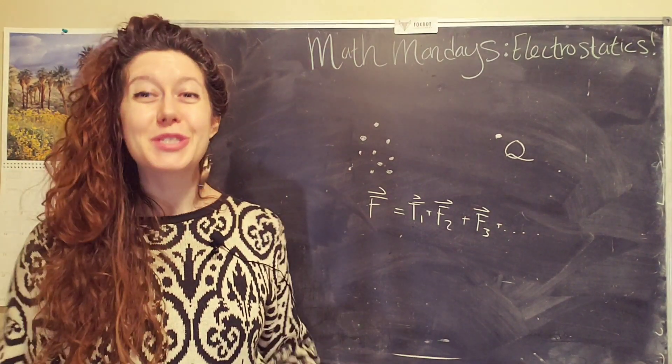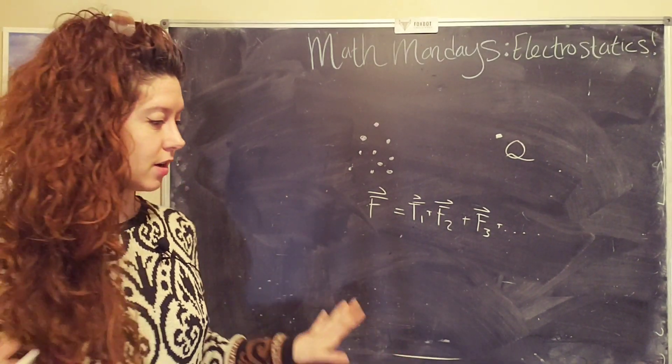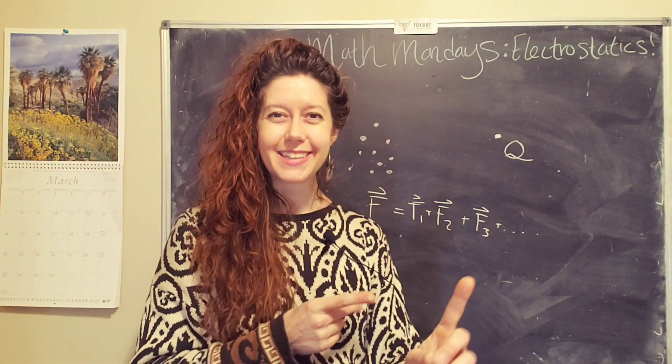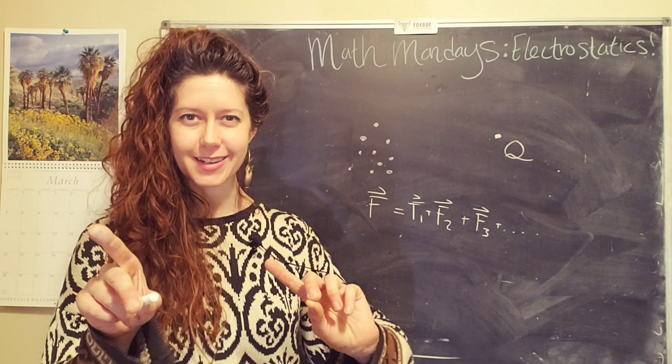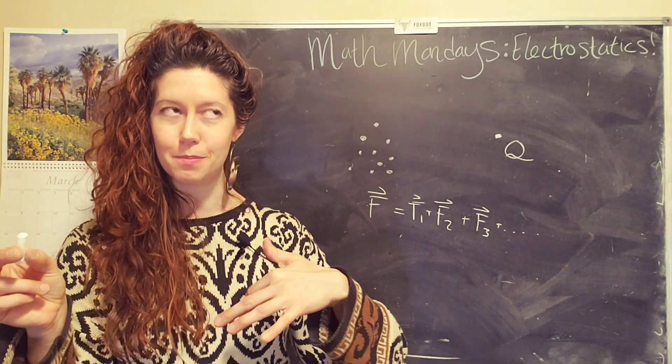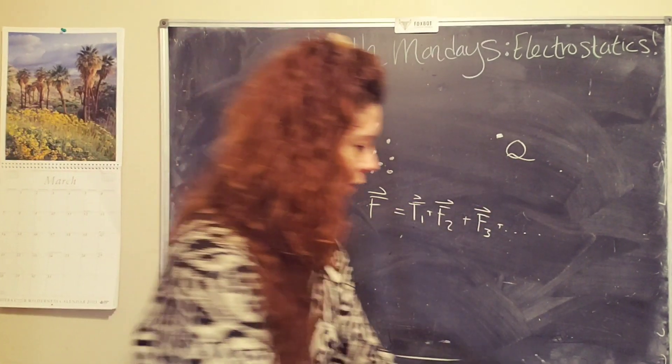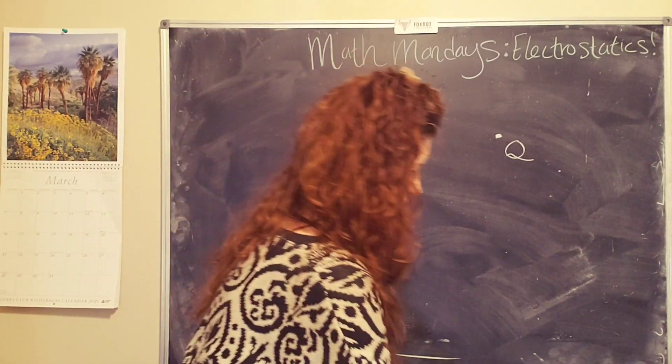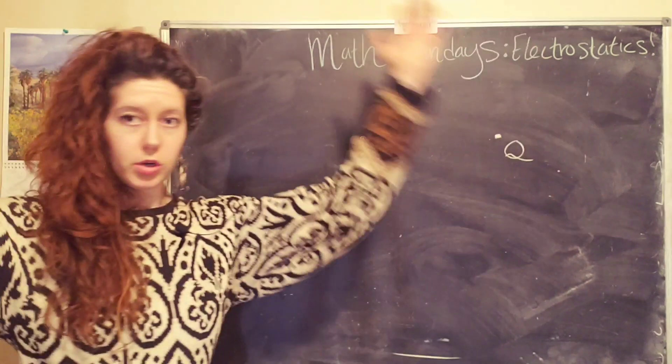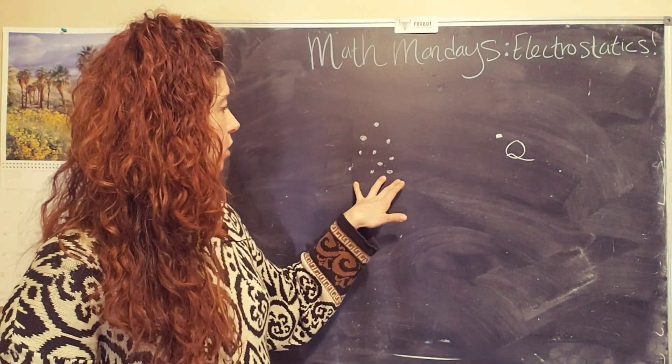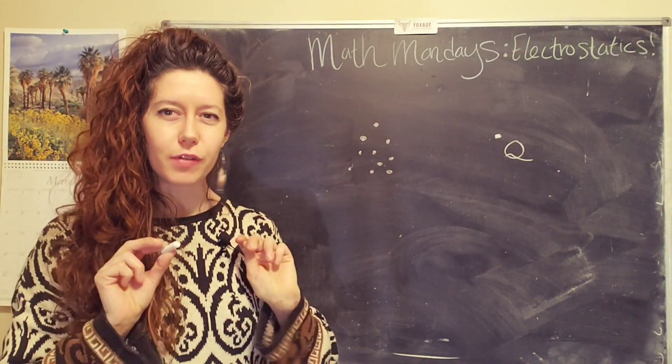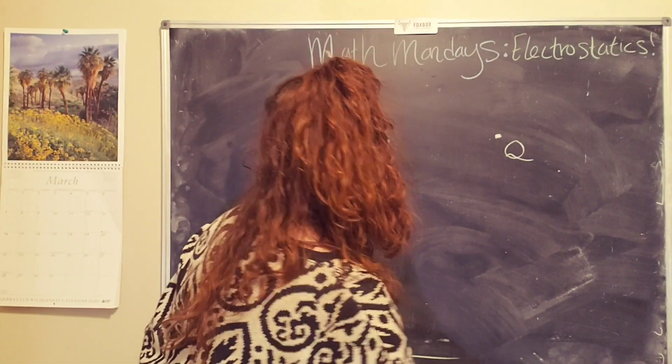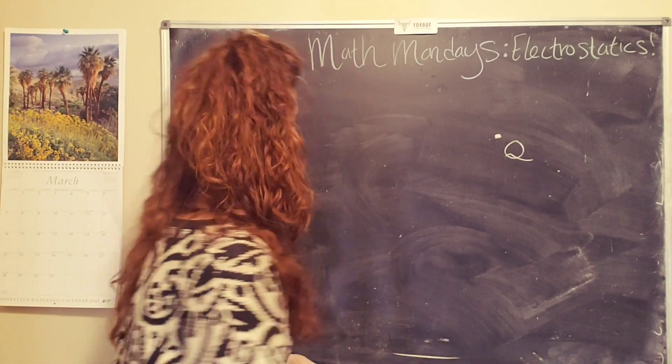We're going to go to electrostatics. So electrostatics, electricity, static. Electrodynamics, electricity, dynamic, movement. Ooh. So electrostatics is the study of stationary charges. Woo! So we're going to assume that our source charges are not moving. Cool. And we are going to take, I'm going to get rid of this because it's right in my way.